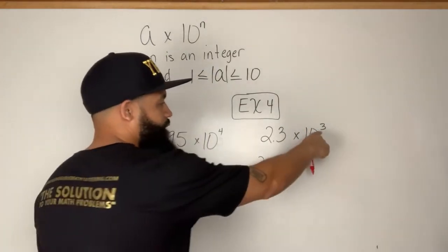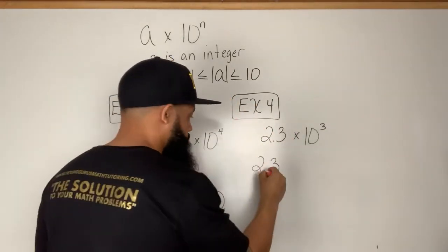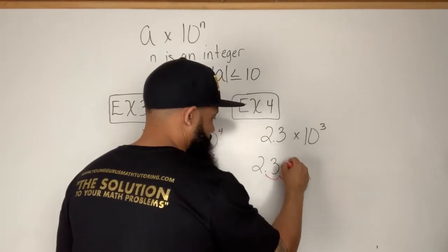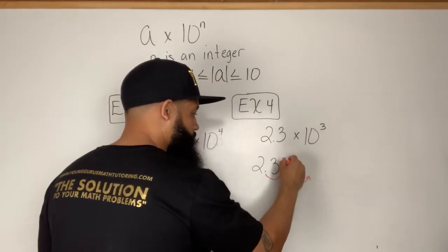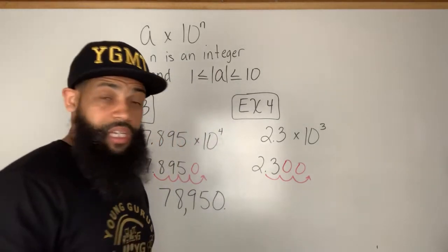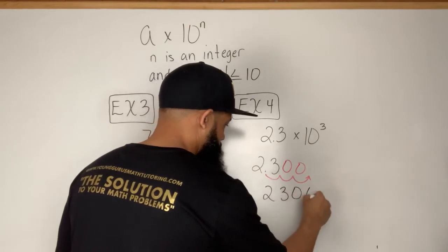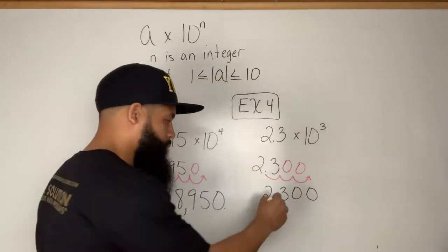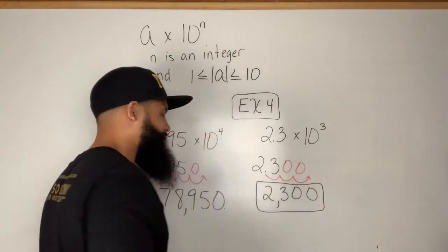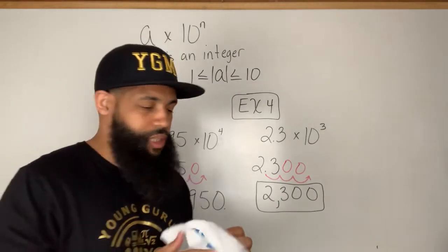I move the decimal three places to the right: one, two, three, and fill those holes with zeros. I end up with 2300 — put in a comma, and that's two thousand, three hundred.